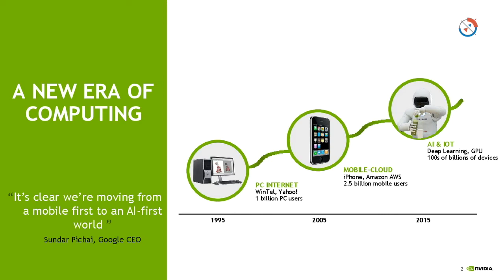We have had a few developments in the technological world which changed the way mankind has been working over the past few decades. The early 90s saw a revolution when the internet was introduced over the PC, and that changed the way we work today. Then came the next big revolution exactly 10 years later — the mobile and cloud-based revolution — which has also changed our lifestyles. The next big wave in technology is what is happening today in artificial intelligence.